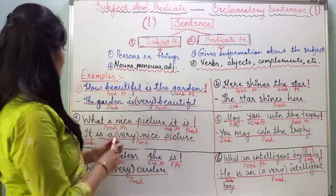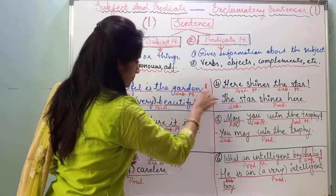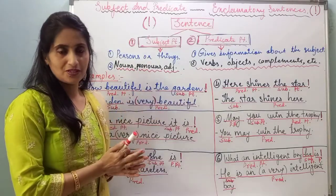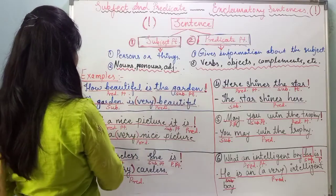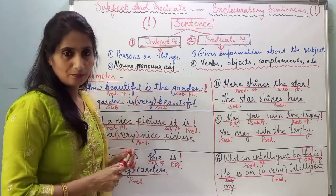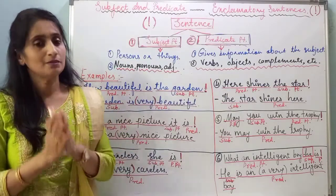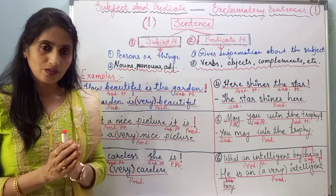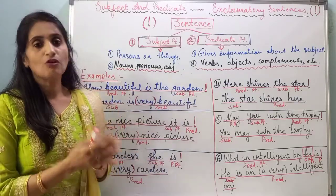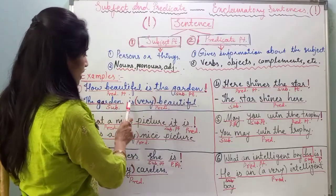See the first sentence: 'How beautiful is the garden!' The sentence ends with an exclamation mark. We have to convert this into a declarative sentence. The conversion is: 'The garden is very beautiful,' or 'The garden is beautiful.' If the exclamatory sentence begins with 'how,' we generally make use of 'very' while converting it into a statement.